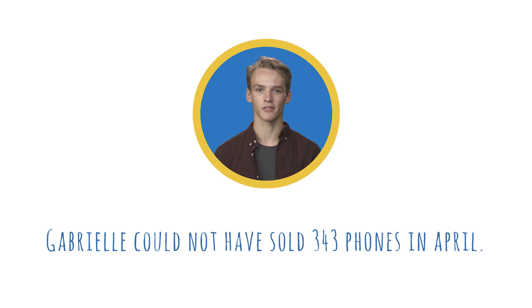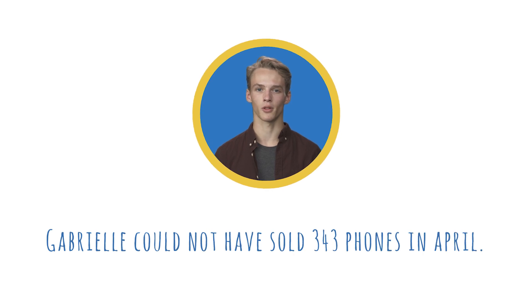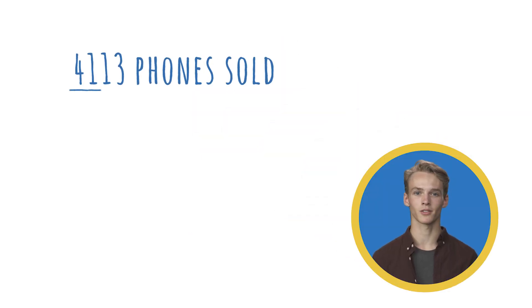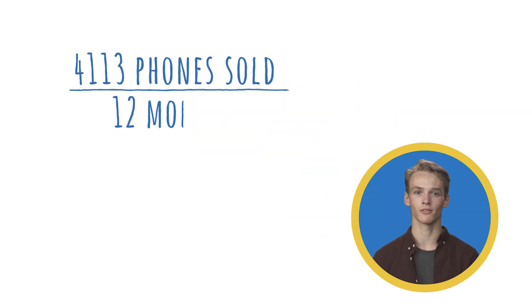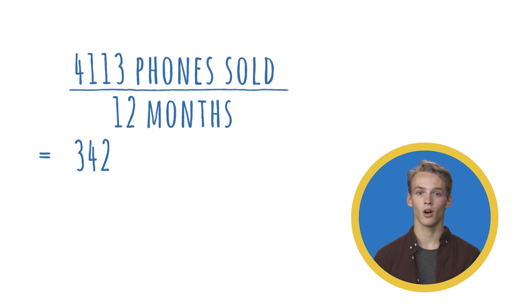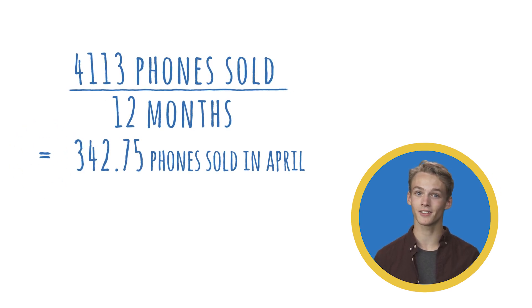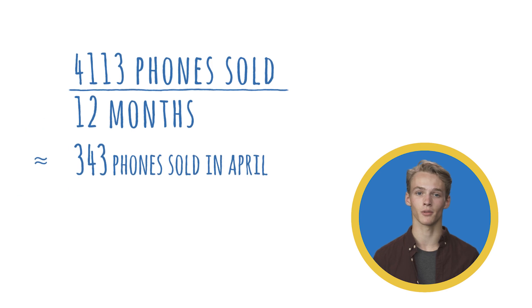First: Gabrielle could not have sold 343 phones in April. Remember, we got the number 343 based on the calculation we did in the question. We assumed Gabrielle sold the same number of phones each month. Also, you can't sell fractions of a phone, so it is possible Gabrielle sold 343 phones in April. So this is not a valid reason and I won't select this one.